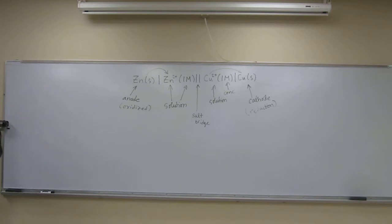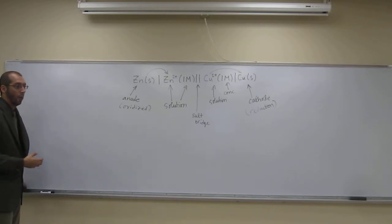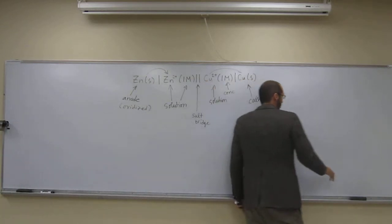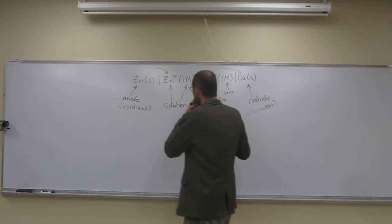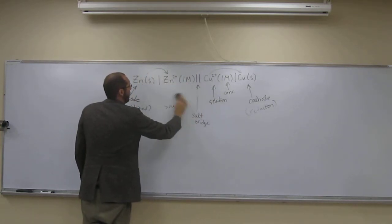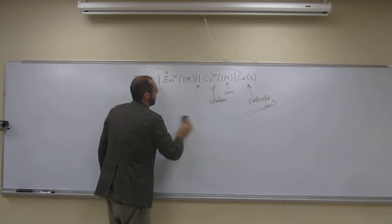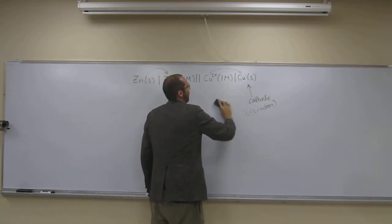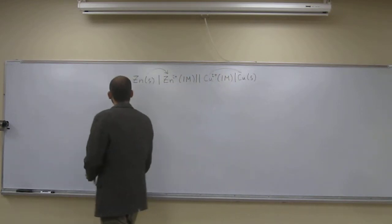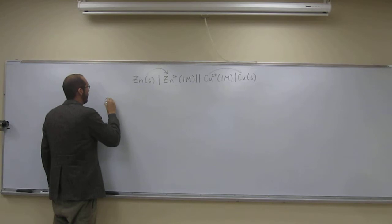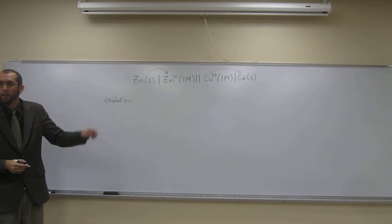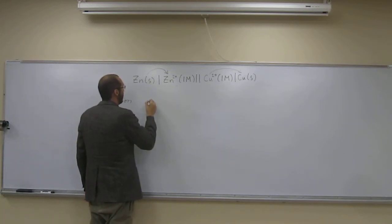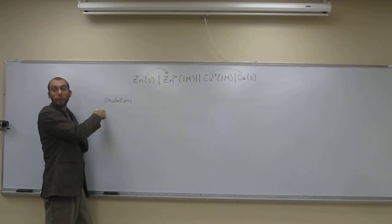That's all of the pieces of the shorthand notation. Now let's go ahead and write out the two half reactions. We described them earlier, so this shouldn't be too difficult, but let's do it anyway. The oxidation half reaction happens at the anode. What's happening? In oxidation, you're losing electrons. Remember Leo - lose electrons is oxidation.